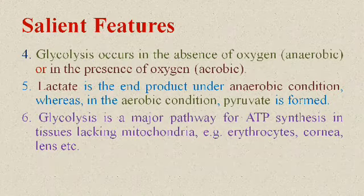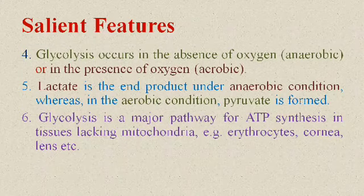Glycolysis is a major pathway for ATP synthesis in tissues lacking mitochondria, such as erythrocytes, cornea, and lens. Because maximum production of energy in the form of ATP occurs through the mitochondria via the TCA cycle or ETS, if any cell lacks mitochondria, glycolysis is the major pathway to produce ATP.